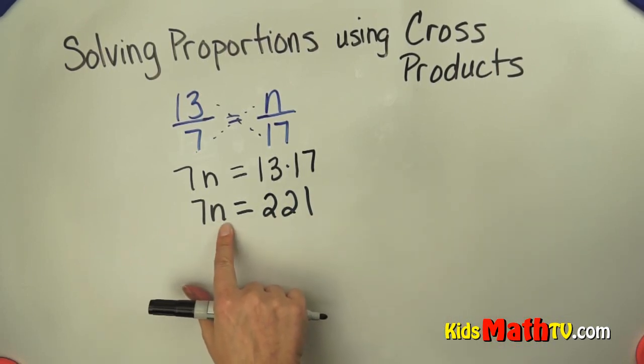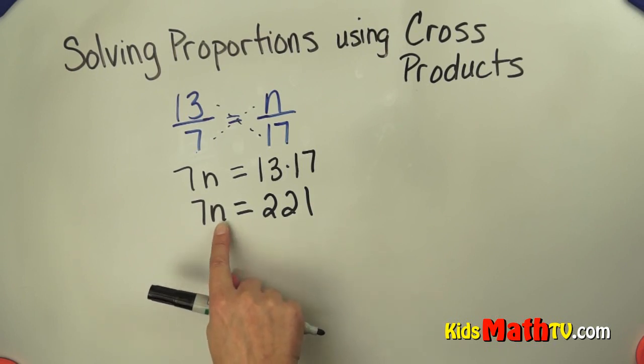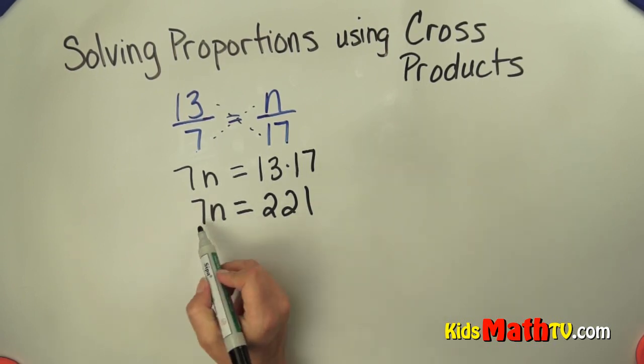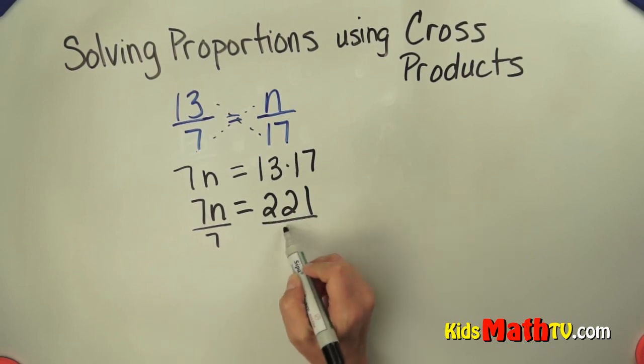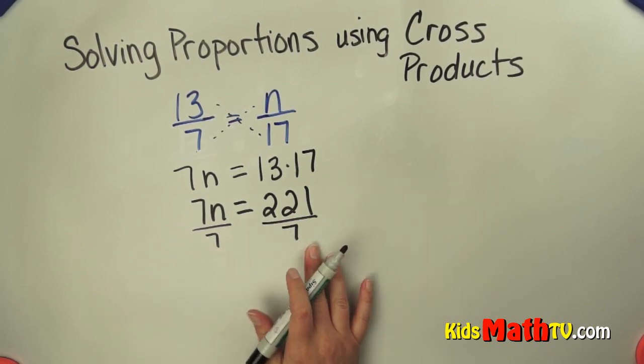Now I need to isolate this variable, this variable n. I'm going to use the inverse operation. Since n is times 7, I'm going to divide by 7 on both sides. Whatever I do to one side I have to do to the other.